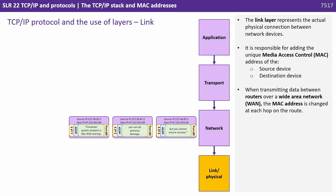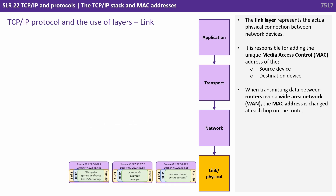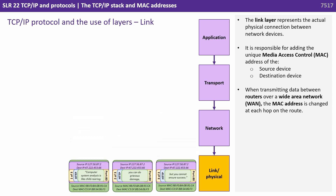The link layer represents the actual physical connection between the network devices. It's responsible for addressing unique media access control or MAC addresses of the source device and destination device. When transmitting data between routers over a wide area network, the MAC address is changed at each hop on the route.